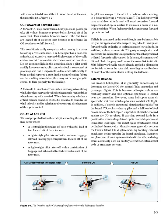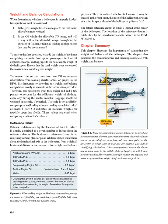However, some helicopter manuals specify the seat from which a pilot must conduct solo flight. In addition, if there is an unusual situation that could affect the lateral CG — such as a heavy pilot and a full load of fuel on one side of the helicopter — its position should be checked against the CG envelope. If carrying external loads in a position that requires large lateral cyclic control displacement to maintain level flight, fore and aft cyclic effectiveness could be limited dramatically. Manufacturers generally account for known lateral CG displacements by locating external attachment points opposite the lateral imbalance.